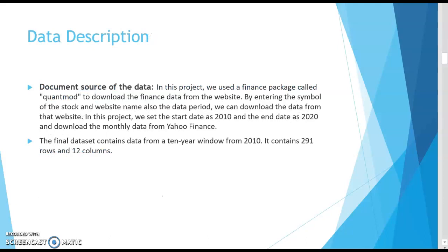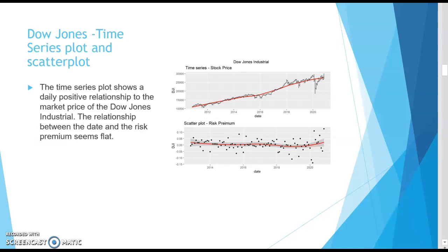We will be downloading data from Yahoo Finance using the quantmod financial package, for a 10-year window with the start date set at 2010 and the end date set at 2020. The data source contains 291 rows and 12 columns. The 12 columns are after adding additional variables like seasonal variables, trend variables, quadratic variables, and lag variables. After the model is set and ready, we will apply the autoregressive model. This is the time series and scatter plot for the Dow Jones.